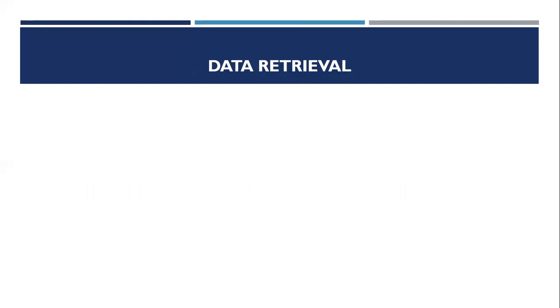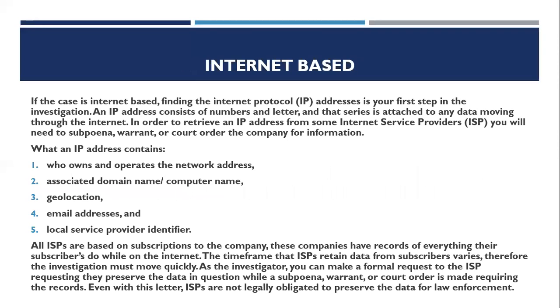There are two types of data retrieval. The first is internet-based. If the case is internet-based, finding the internet protocol address is your first step in the investigation. An IP address consists of numbers and letters, and that series is attached to any data moving through the internet. To retrieve an IP address from an internet service provider, you will need a subpoena, warrant, or court order. An IP address can contain information about who owns and operates the network address, associated domain name, computer name, geolocation, email addresses, and the local service provider.